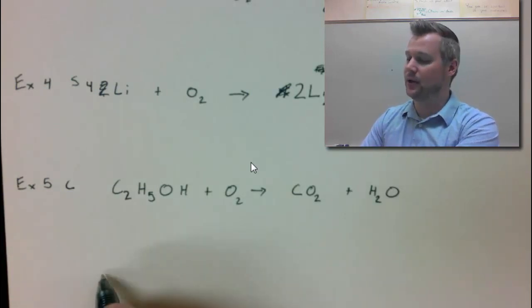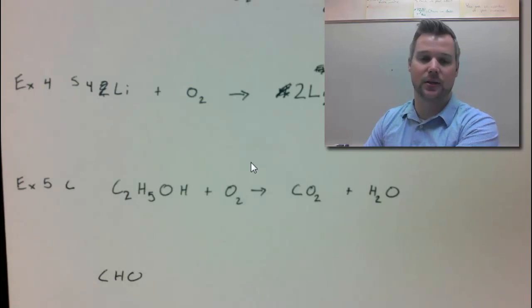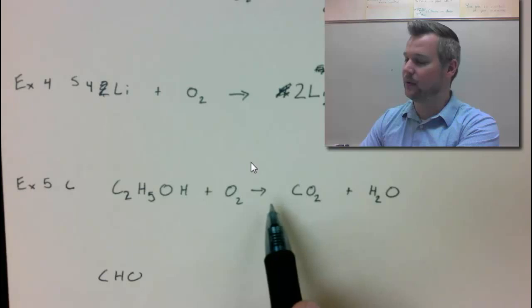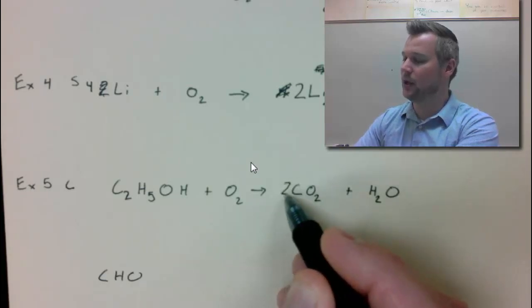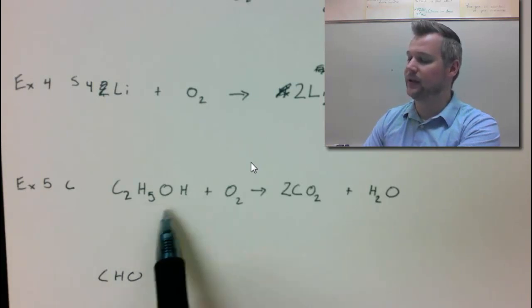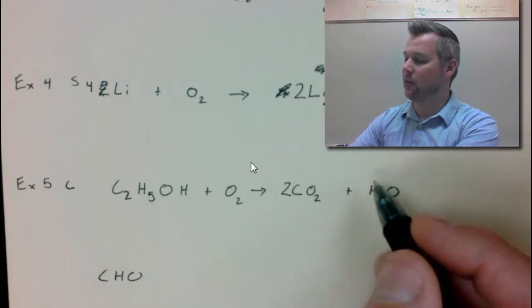Now, when you balance combustions, this is kind of a special pattern. You want to do carbon, hydrogen, oxygen, CHO order. So we have two carbons. We need to multiply the CO2 by 2. I'm going to come back into the left and count all of my hydrogens. I have 5. I have 1, so that gives me 6. So I need to multiply water by 3.